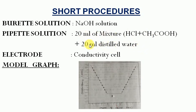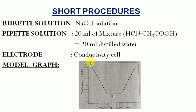In the distilled water solution, we will immerse the conductivity cell. The initial conductance is zero. We will add the titrant and record the conductance. We will plot the volume of NaOH on the x-axis and add conductance readings to the graph.